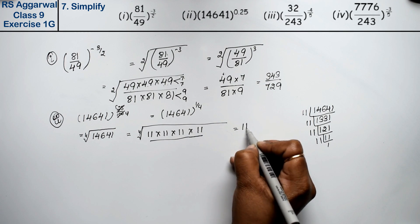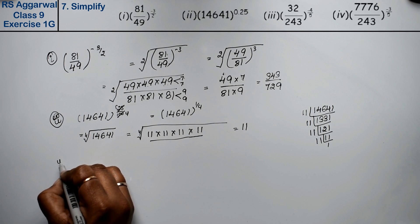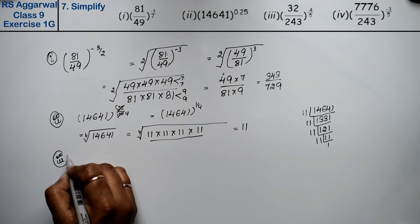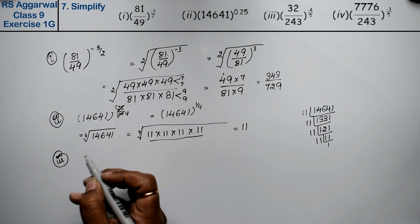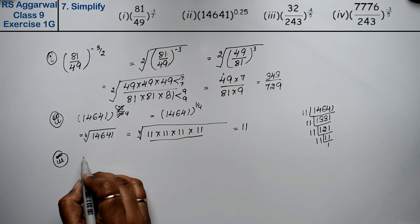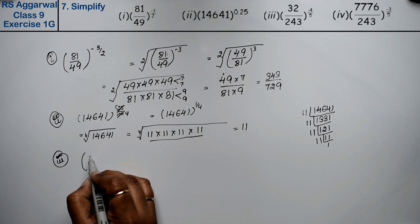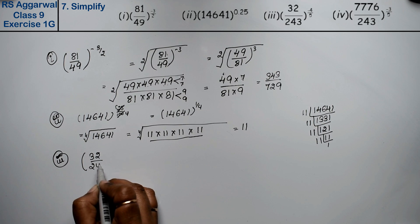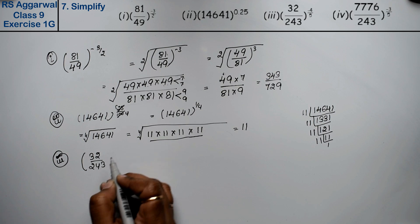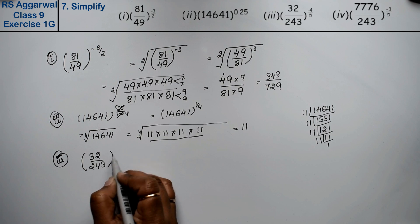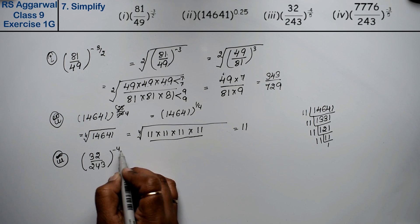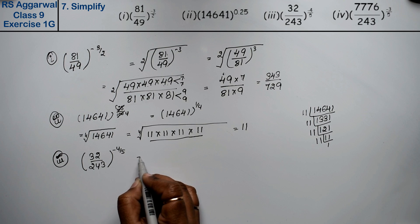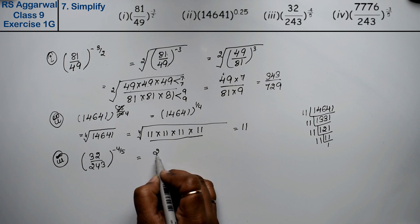So the answer for part 2 is 11. Now let's do the 3rd part. 3rd part is 32 upon 243 to the power minus 4 upon 5. Since it's negative, first we take the reciprocal.